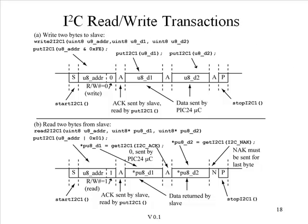In summary, a typical write program begins with a start function, followed by a put function to output the address with the read/write bit set to zero. All following transactions up to the end consist of a series of puts — writing data from the PIC to a peripheral. In contrast, a read transaction has a one for the read/write bit. There's a start and stop at both ends of the transaction; we first write the address with the one bit, wait for an acknowledge, and then read data back using the get I2C function.